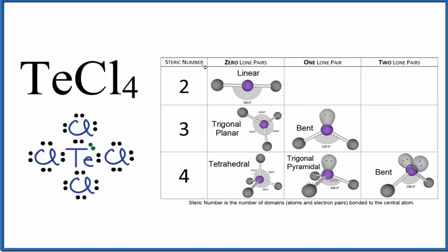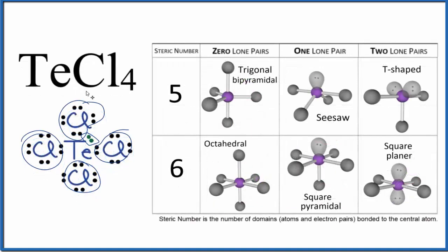So the way we do this, we're gonna look at the steric number. That's the number of things attached to that central atom. We have one, two, three, four chlorines, and one lone pair. So we have five things attached to the central atom. We're gonna need a new chart. That's better.